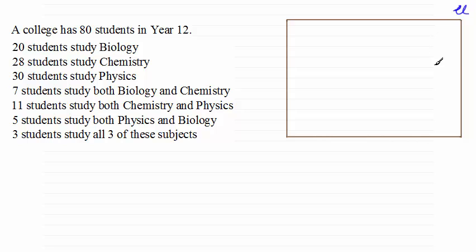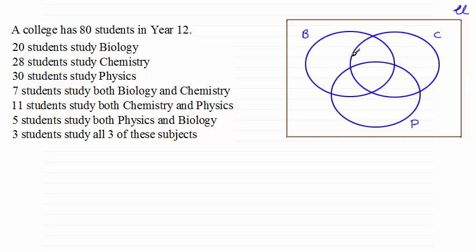And then I want to create three overlapping sets. I've called them B, C and P - B for biology, C for chemistry and P for physics.